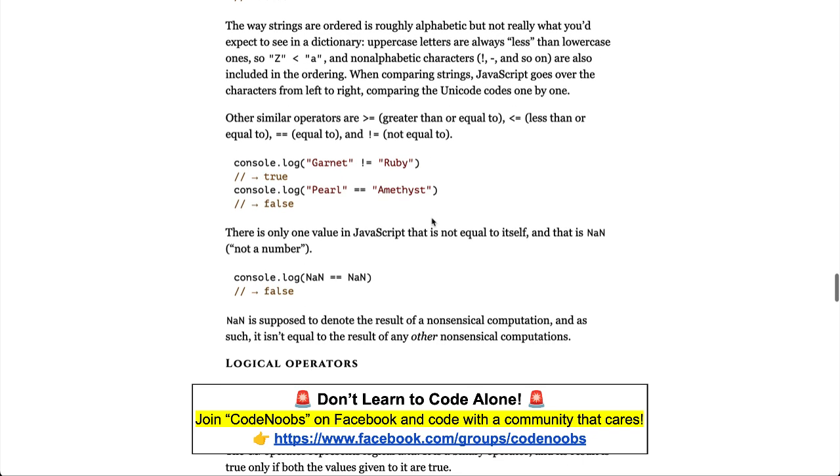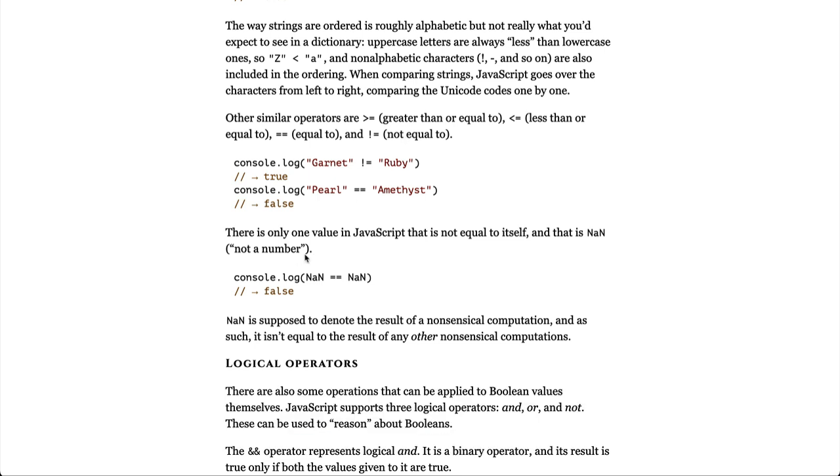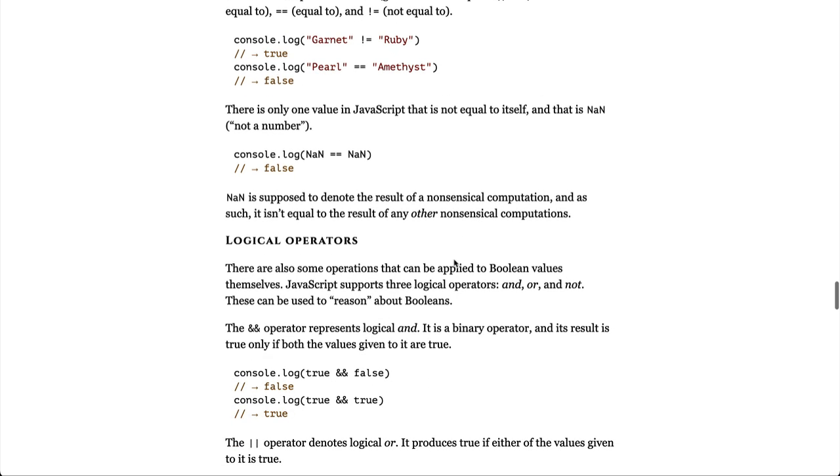Other similar operators are greater than equal to, less than equal to, equal to, and not equal to. There is only one value in JavaScript that is not equal to itself, and that is not a number. Not a number is supposed to denote the result of a nonsensical computation, and as such, it isn't equal to the result of any other nonsensical computations.